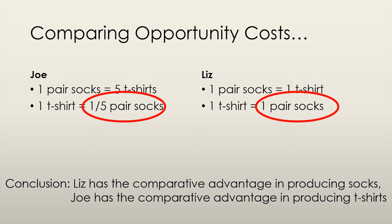As for absolute advantage, both Joe and Liz can produce the same amount of t-shirts if they focus all their efforts on t-shirt production, but Liz can produce more pairs of socks if she specializes in socks. Thus, nobody has the absolute advantage in t-shirt production, but Liz has the absolute advantage in sock production.